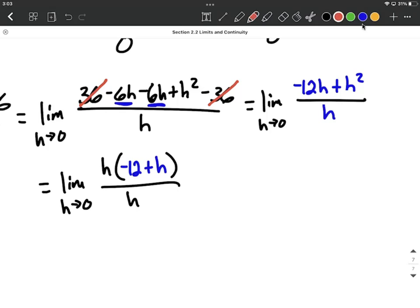All right, from here, we have an h multiplied by the entire numerator and an h multiplied by the entire denominator. So we can put this into lowest terms by eliminating those h's, leaving us with the limit as h approaches 0 of negative 12 plus h.